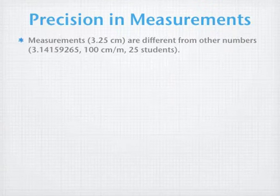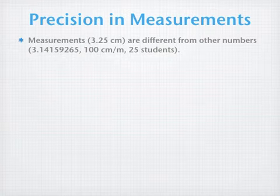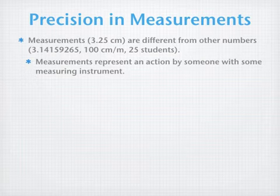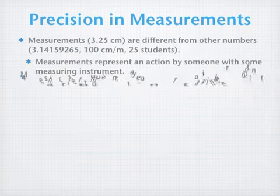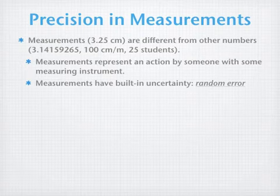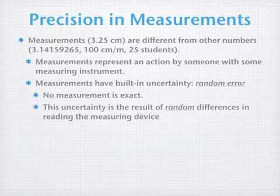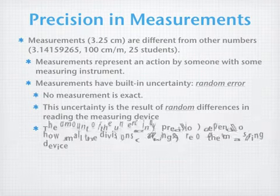First, let's look at some important considerations for precision in measurements. Measurements are different from other numbers. Measurements are like 3.25 centimeters. Other numbers include pi, 100 centimeters per meter as a conversion factor, and 25 students as a counted number. Measurements represent an action by someone with some measuring instrument. All measurements have a built-in uncertainty, which is the random error discussed in the previous video. No measurement is exact, and this uncertainty results from random differences in reading the measuring device. Different people can read differently, and even one person can read differently from one measurement to another.